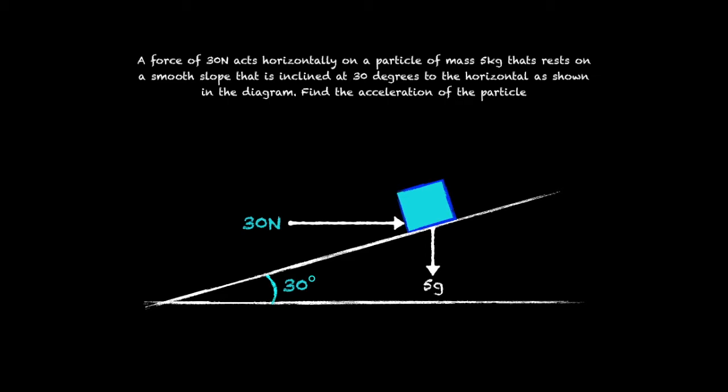And we have a normal reaction force denoted by the letter R. These are all the forces because the slope is smooth and so there's no friction.